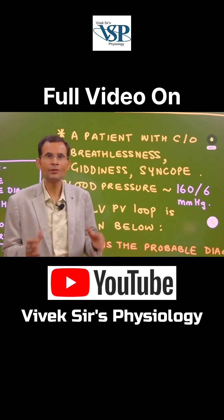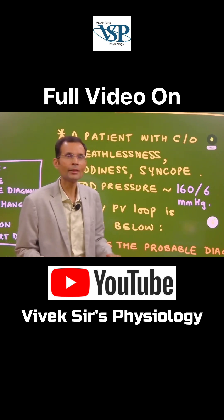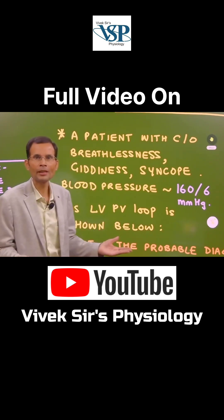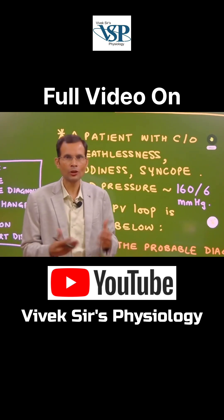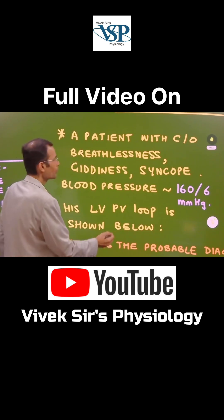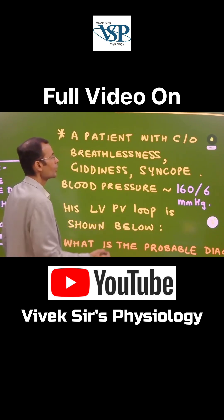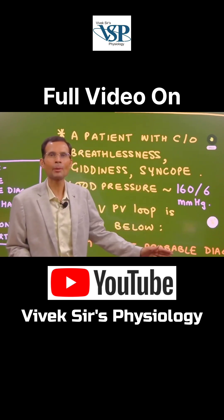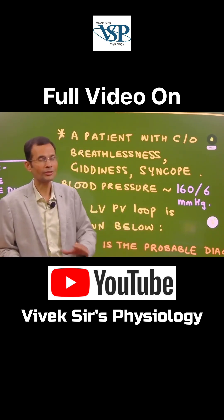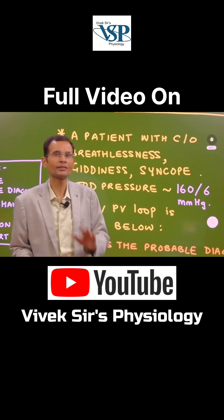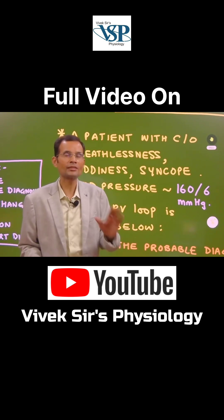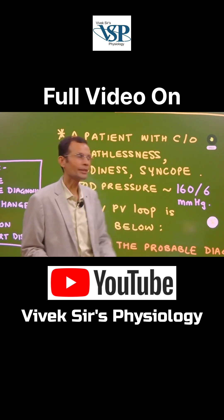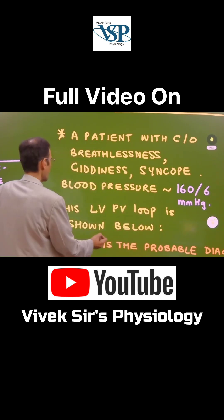This could possibly be a CVS-related ailment or a respiratory system issue — we are not sure at this point. However, the blood pressure reading of 160/60 mmHg gives some confirmation that this is a CVS-related ailment.